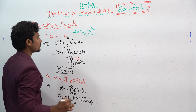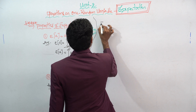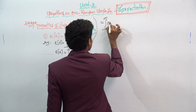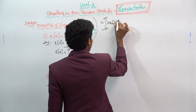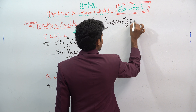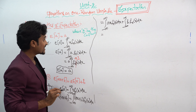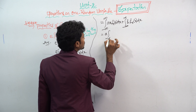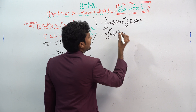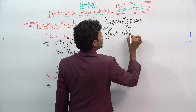Replacing x with ax + b gives: E(ax + b) = integration from minus infinity to infinity of (ax + b) times f(x) dx. We can split this into: integration from minus infinity to infinity of ax times f(x) dx, plus integration from minus infinity to infinity of b times f(x) dx.